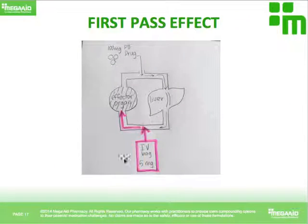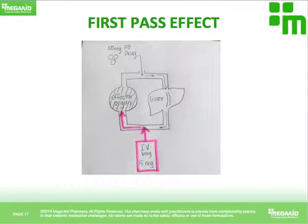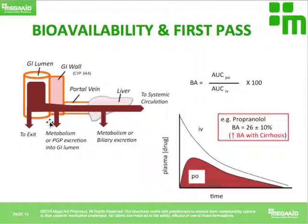This is the concept behind giving a much lesser dose of a drug in injectable form versus a much greater dose in oral form. Because in order for the drug to get into your systemic circulation and be distributed to your tissues, it first passes from the gut through the portal vein to the liver, where it's metabolized and excreted.